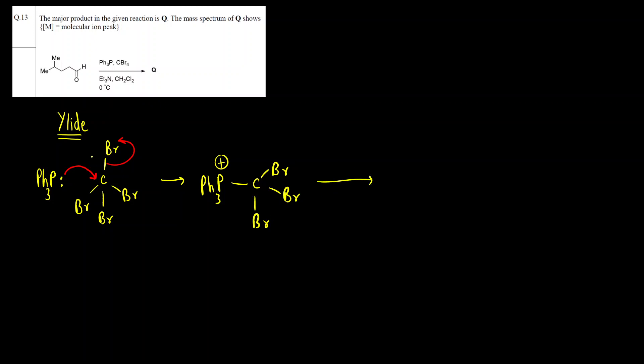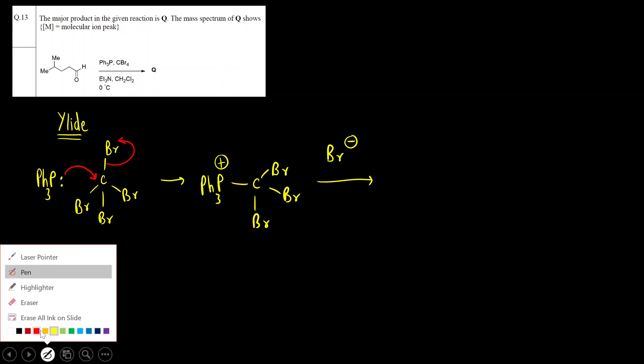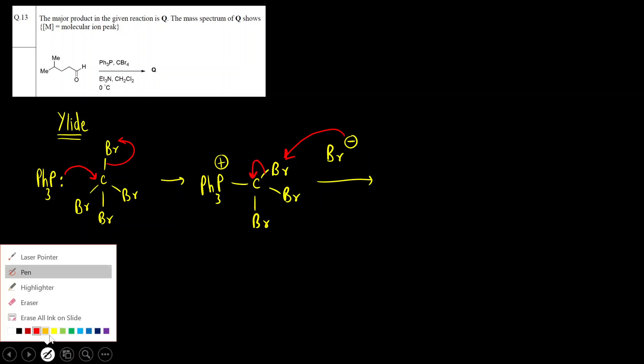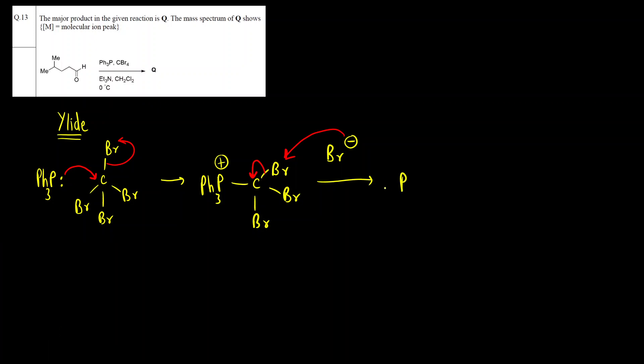Okay now the next step is the Br minus that we had, that had gone as a leaving group, that will attack. This will take Br plus and negative charge will be left on the carbon. Okay so what we will get is PPh3 carbon having a lone pair negative charge, this phosphorus having positive charge and then there are two Br groups. Okay this is the intermediate that is ylide, ylide or elide and Br2 will go away as a leaving group. Br minus has picked up Br plus. Okay Br2 goes away as a leaving group.